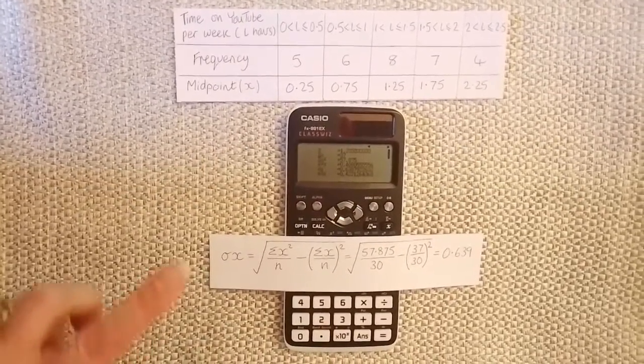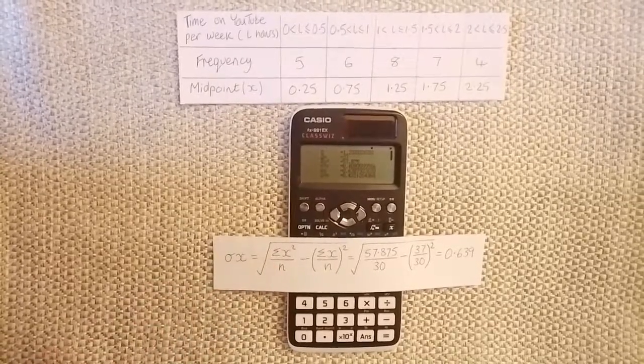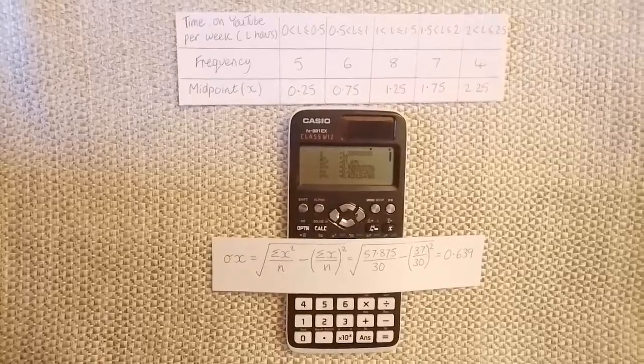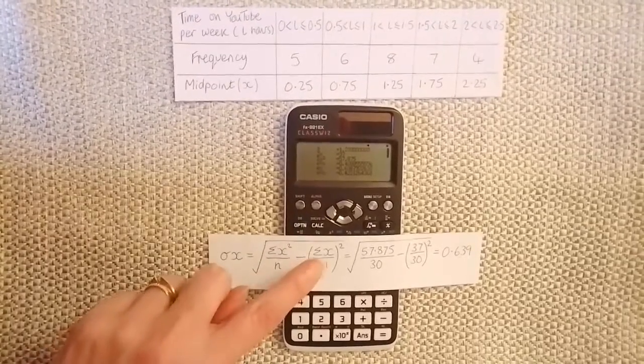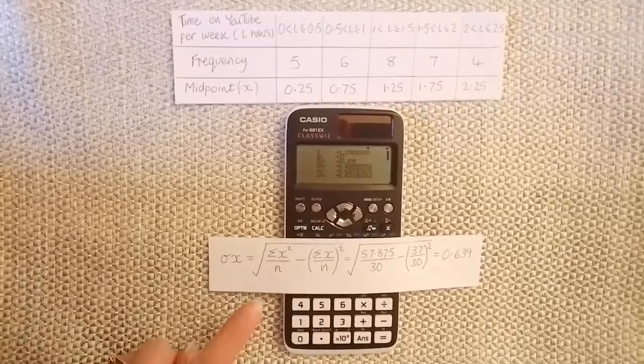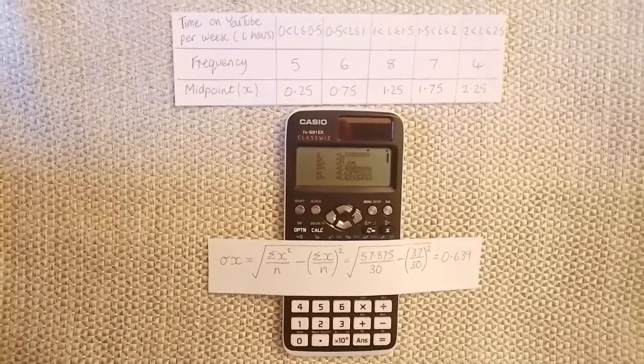We can find this information in the summary statistics. Sigma x squared is the sum of fx squared, and sigma x is the sum of fx. n is the number in the sample.